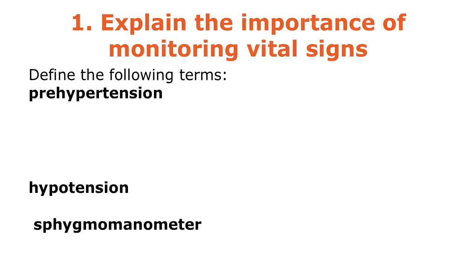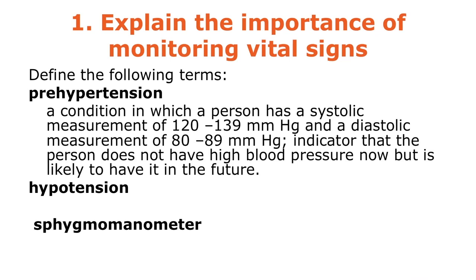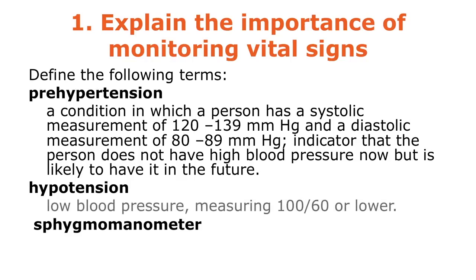Pre-hypertension is a systolic measurement of 120 to 139 and a diastolic of 80 to 89. These are pre-indicators — the person does not have high blood pressure now, but may in the future. Hypotension is low blood pressure, with measurements of 100/60 or even lower. The sphygmomanometer is the medical term for a blood pressure cuff or kit.